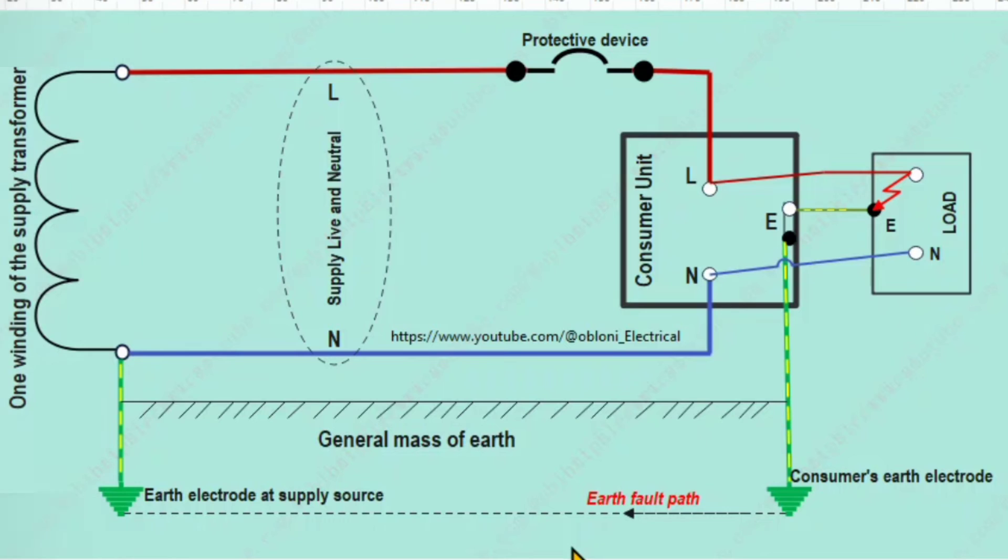Okay, then let's now talk about the TT system. In this system, the earthing arrangement at the consumer's installation is independent of the source earth. And so the impedance of the path for fault currents to flow when there is a short circuit between a live conductor and earth is high and could be very high if the earthing at the consumer's installation is not properly done. Because in the TT system, the earth serves as a part of the conducting path for the fault current to flow back to the source of supply in case of an earth fault.